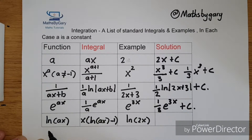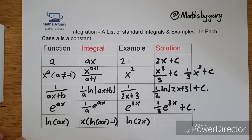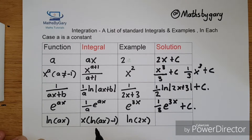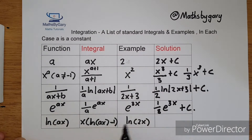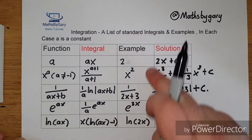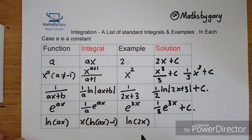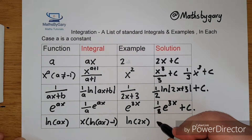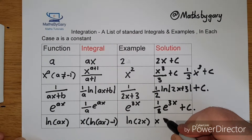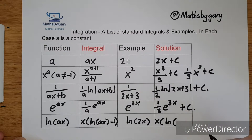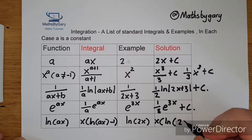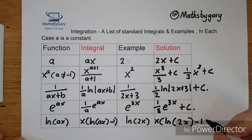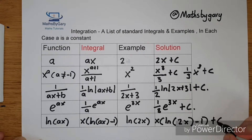Moving on again: ln(ax) will become x·ln(ax) minus x. We're just following the rules — the function, the rule, the example, and the solution. So ln(2x) will become x times ln(2x) minus x, and then the constant of integration plus c. Just remember your brackets.